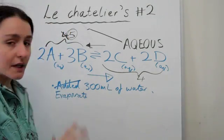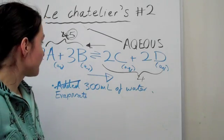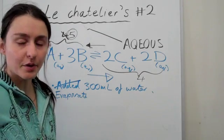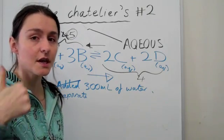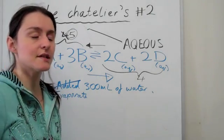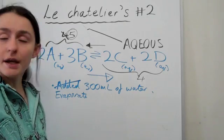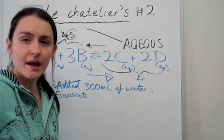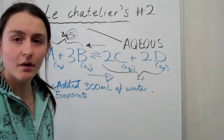Alright, so I hope that cleared up the issue of volume change and pressure change in two different systems in aqueous and in gaseous. Have a look at part 3 of Le Chatelier's principle and then we'll go through some examples as well. Thank you, bye.